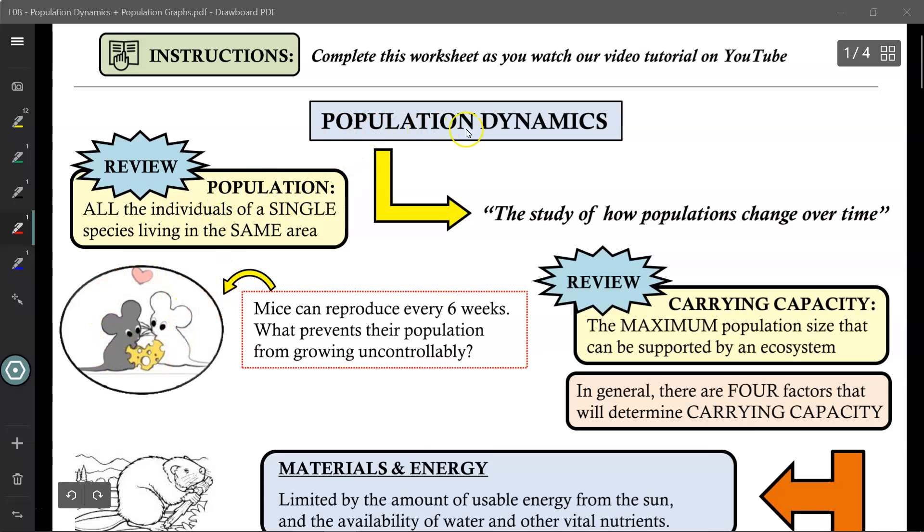So when we talk about population dynamics, we're talking about the study of how populations will change over time. Now as many of you know, mice can reproduce very quickly. In fact, they can give birth to new babies every six weeks. So what prevents their population from growing uncontrollably?